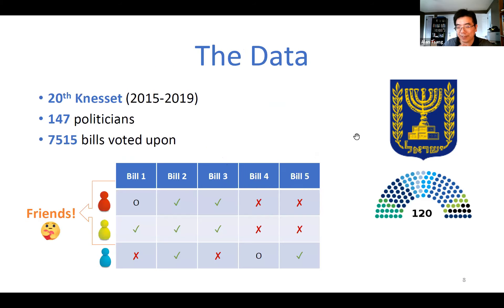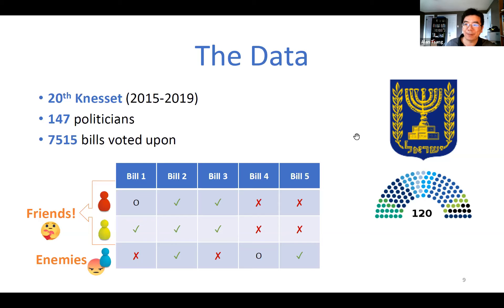We have data showing bills introduced to parliament and which members voted on each bill. People who vote similarly can be thought of as friends, and people who vote differently as enemies. This gives us a framework to build a hedonic games model: you would prefer to be on teams where you're supported by friends and with as few enemies as possible.